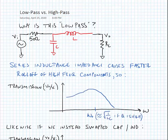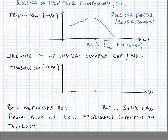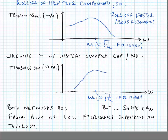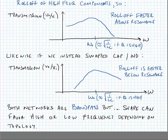For the low-pass circuit, we still see a bandpass response where away from the center frequency there is attenuation in both directions. The center frequency is approximately equal to 1 over the square root of LC if Q is high enough, but high frequency components get attenuated faster than low frequency components. If we swap the capacitor and inductor to make a high-pass network, we see a faster roll-off at low frequency than at high frequency. Both networks are bandpass, but the shape favors high or low frequencies depending on the topology chosen.